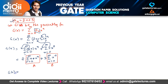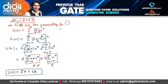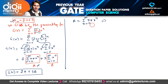So this generating function can also be written as 2A + 3B. Now let us solve for the value of A. We have A = summation from n = 0 to infinity of n · x^n. If we expand this by putting the values of n, we get: 0 · x^0 + 1 · x^1 + 2 · x^2 + 3 · x^3, up to infinity.